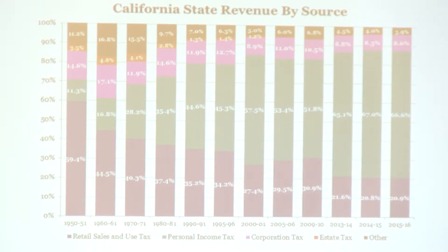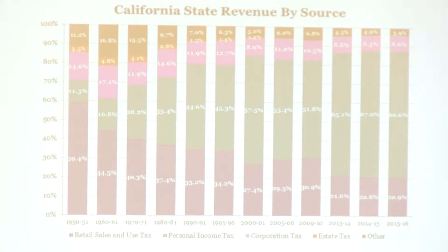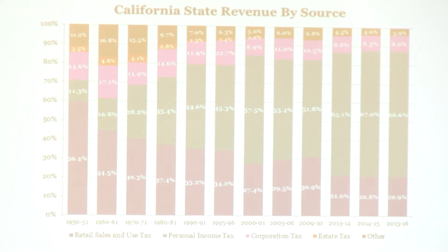This is California state revenue by source. It starts in 1950, goes every 10 years, and the last couple are the most recent fiscal years. The retail sales and use tax is the dark blue at the bottom. You can see that in 1950, it was 60% of our revenues. Personal income tax was tiny, maybe 11%. Part of that is policy decisions, but part of that is also because the retail sales and use tax is only on goods. Goods have become much cheaper — it's easier for people to feed and clothe themselves. But it also means more money is being spent on services like education and healthcare, which are becoming more expensive and more essential to quality of life. And we don't tax those. That's a policy decision about whether that's a good thing or a bad thing — if you're trying to raise revenue, it's a bad thing; if you're trying to pay for essential services, it's probably a good thing.